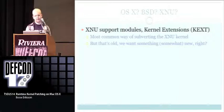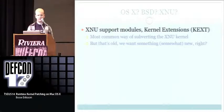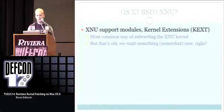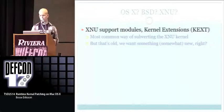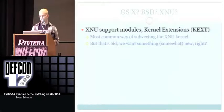XNU, like any modern operating system, supports modules. On Linux you have LKMs, BSD has KLDs, and OSX has KEXTs — kernel extensions for device drivers and so on. You can extend the kernel at runtime and add new code to it. This has been the primary way to subvert the XNU kernel. WeaponX, for example, uses kernel extensions to patch it. There was also a talk last year at Black Hat by Jesse that did the same thing with KEXTs for every new release of OSX.